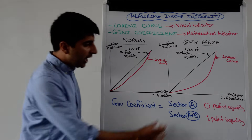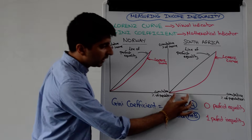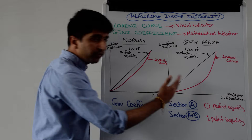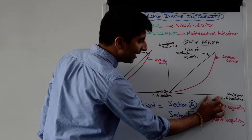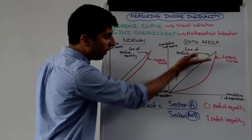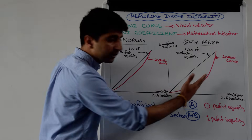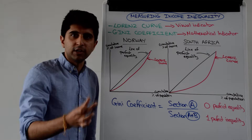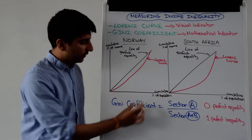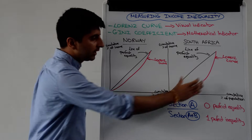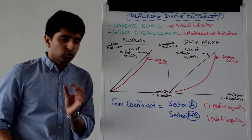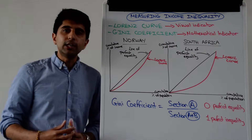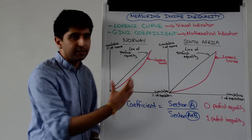Looking at South Africa: the poorest 20% of the population are only earning maybe 5% of total income, whereas maybe the top 10% of the population are earning around 50% of total income. The further you draw the Lorenz curve away from the line of perfect equality, the more total income is being held by a small proportion of the richest in society. With Norway, there is still some income inequality, but much less. Visually, it's very easy to see which country has the more unequal distribution.